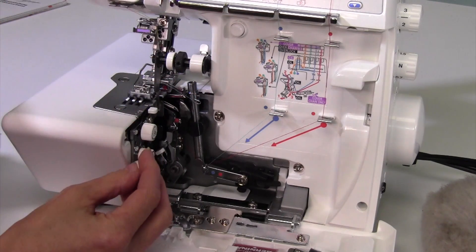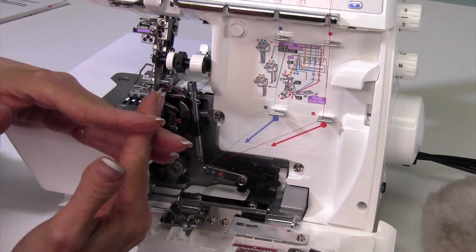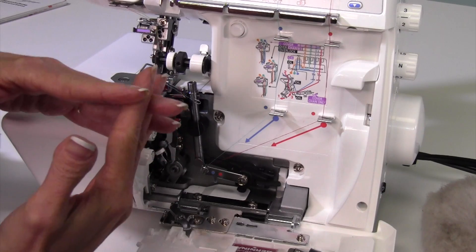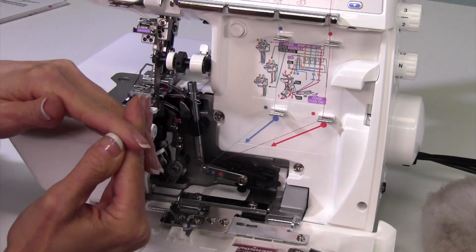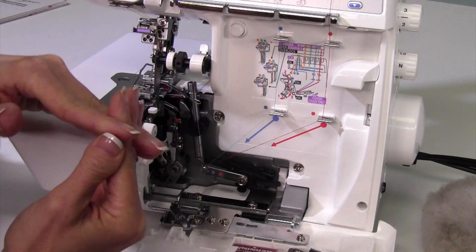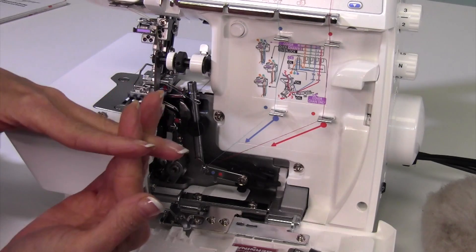Because a serger runs at such a high speed, over time if you don't lubricate all those moving parts, they will eventually get hot while you're serging and then seize. That is no fun because you may or may not be able to use it in the future. Sometimes they can get it undone, but not always.